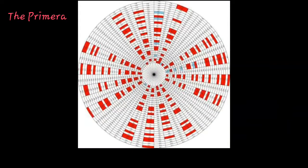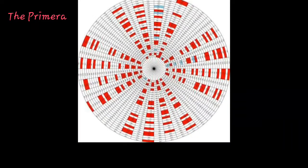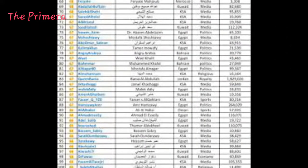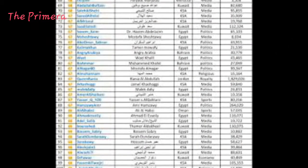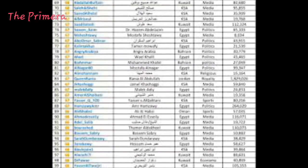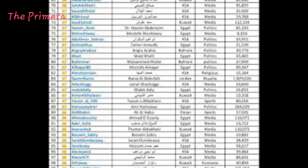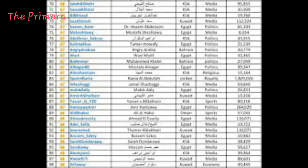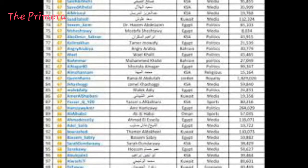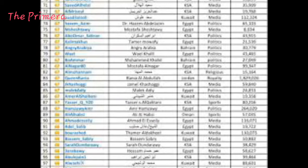Divisibility and divisibility rules play a huge part in determining whether or not a number is prime. For instance, one divisibility rule states that if the number is even, it can be divided by 2 and is, therefore, not a prime number. Another helpful rule to remember is that if the added total of all the digits in a number is divisible by 3, then the number itself is divisible by 3 and is not a prime number. Similarly, if the last two digits of the number are divisible by 4, the entire number will be divisible by 4 and would therefore not be a prime number.